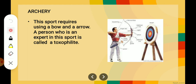The very first one: this sport requires using a bow and an arrow. A person who is an expert in this sport is called a Toxophilite. In this picture you can see the person is holding a bow and an arrow. So this sport where we use a bow and an arrow is known as archery.